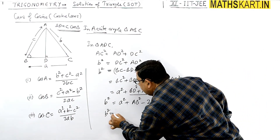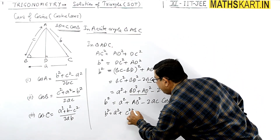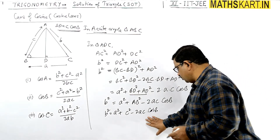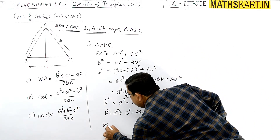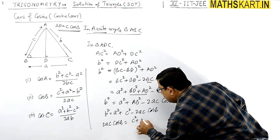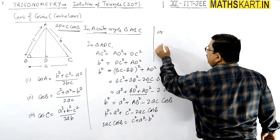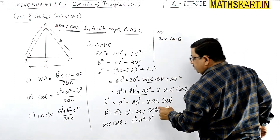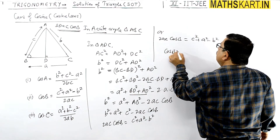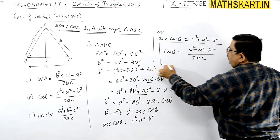Rearranging the formula: 2ac·cos B = c² + a² − b². Therefore cos B = (c² + a² − b²) / 2ac. This is the standard cosine law formula for angle B. You can shift the value to get cos B on one side.